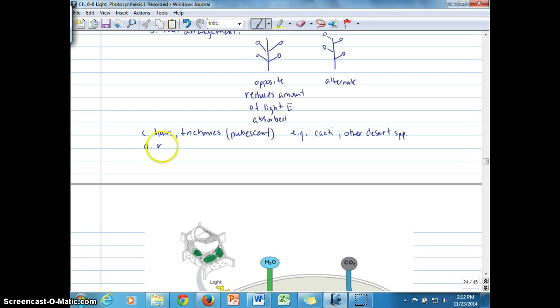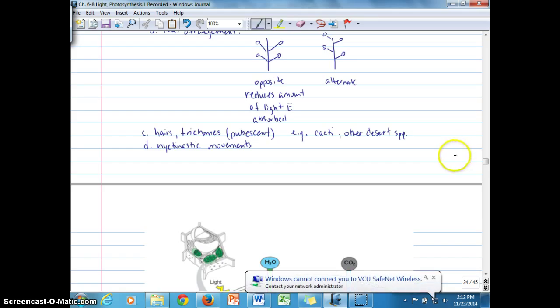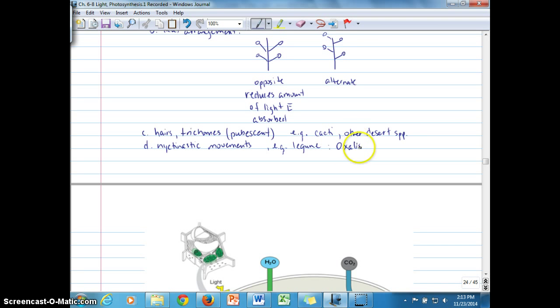And then in some cases, nictinastic movements can allow plants to either absorb more light radiation or to limit light radiation absorption. In that case, the plant or the leaves are moving either toward the light or away from the light. So there are certain legume species that do this. Oxalis and mimosa, which is called sensitive plant also, are examples of plants that will move toward light or respond to touch. And then there are species that will limit their incoming solar radiation by closing up, too.